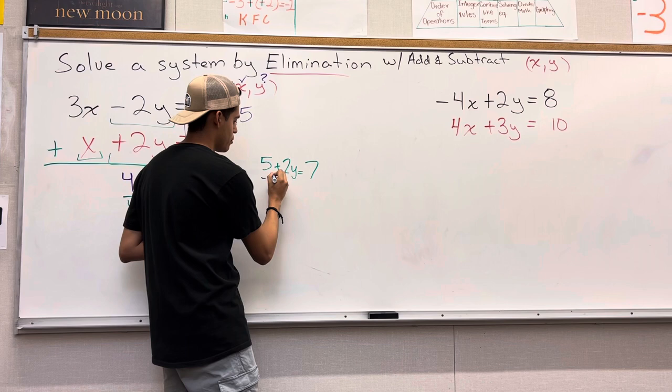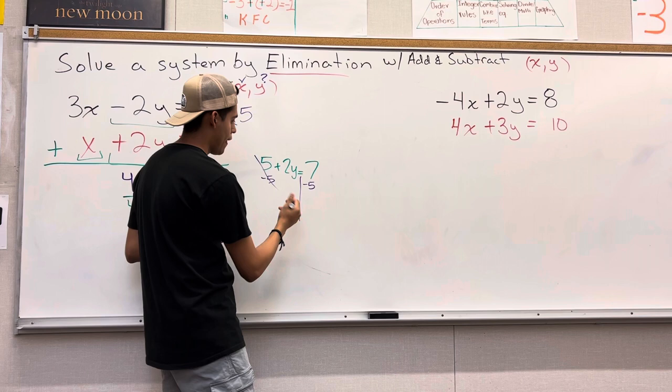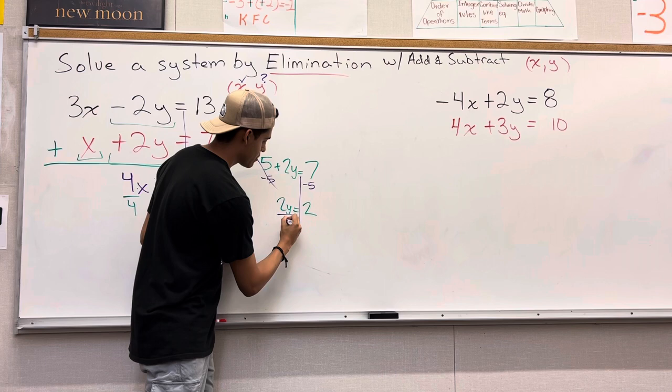5 minus 5 would give you 0. Forget about that. Bring down the 2y. 7 minus 5 would give you 2. Now, solving for y, this multiplication, do the opposite, which is division. Divide both sides by 2. And you would get y equals 1.